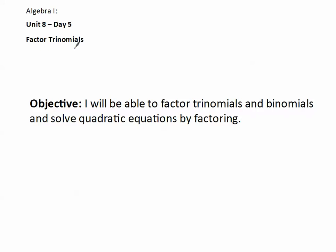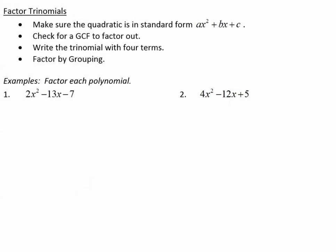In this section, our goal is to be able to factor trinomials and binomials and solve quadratic equations by factoring. The process of factoring trinomials is to first make sure the quadratic is in standard form — ax squared plus bx plus c. Then check for a GCF to factor out. Then write the trinomial with four terms. Finally, factor by grouping.